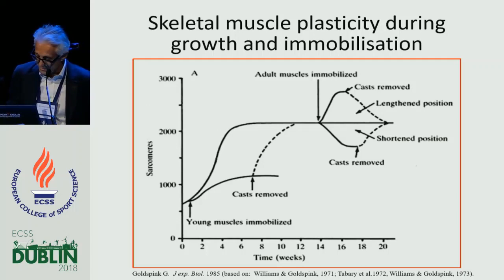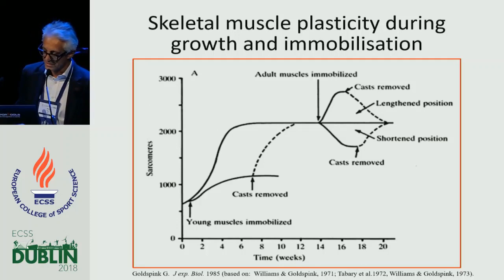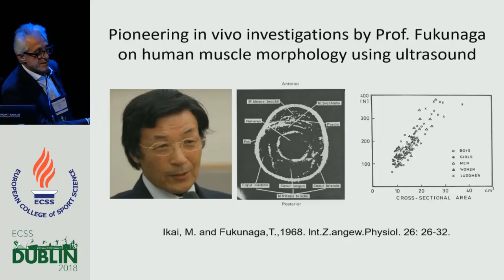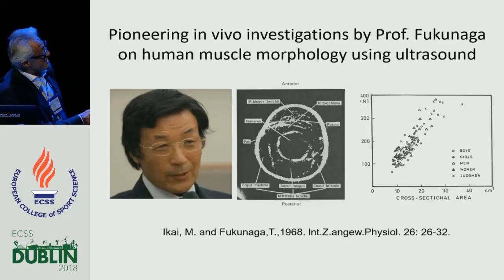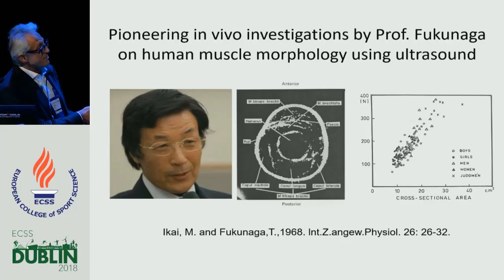This work was done in the 70s and 80s, but since the introduction of ultrasound, it is now possible to do these measurements in vivo. Perhaps the pioneer of this work is Professor Fukunaga, and in 1968 he was the first to show using ultrasound that there was a straight relationship between muscle cross-sectional area and muscle strength. This was also known for animal muscle, but in human muscle he was the first to show this relationship.